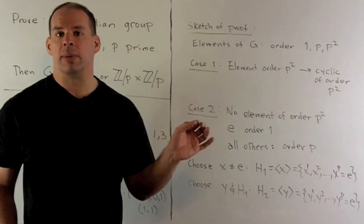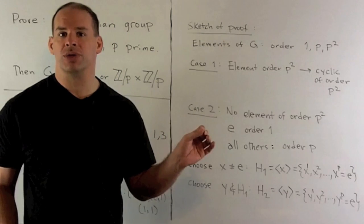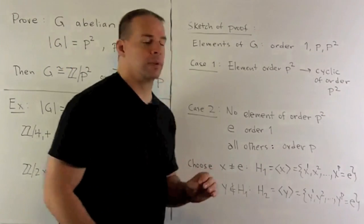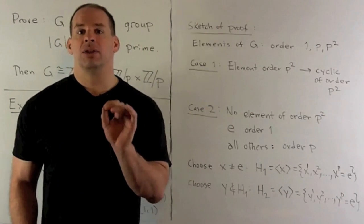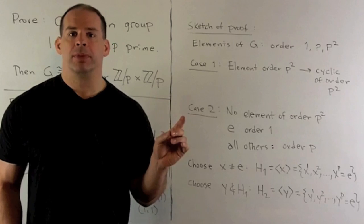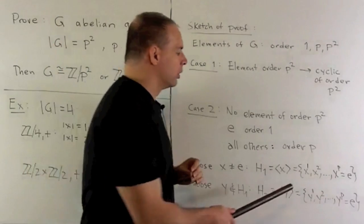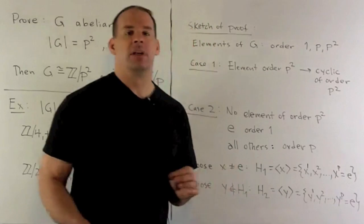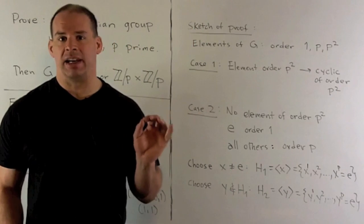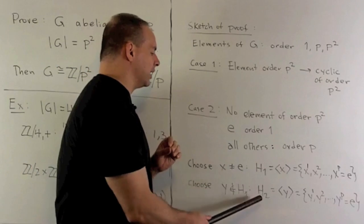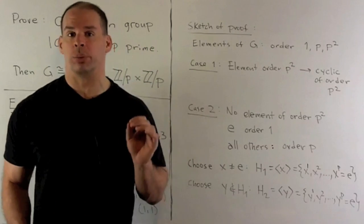Now since our group is order p squared, that leaves a lot of other elements. So I take any one of those that's not in my subgroup H1. Call that y. We take subgroup generated by y. So that's going to have p elements. So we'll have y, y squared, up through y to p. Since y is order p, that gives us the identity again. So I have two subgroups, H1 and H2, each cyclic of order p.